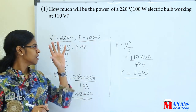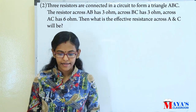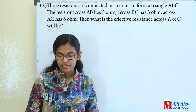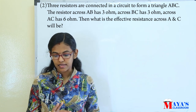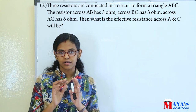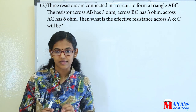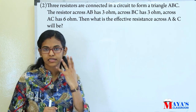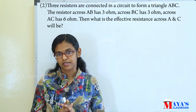The next question is: three resistors are connected in a circuit to form a triangle ABC. The resistor across AB has 3 ohm, across BC has 3 ohm, and across AC has 6 ohm. Then what is the effective resistance across A and C? It is connected to A and C — this is the effective resistance.